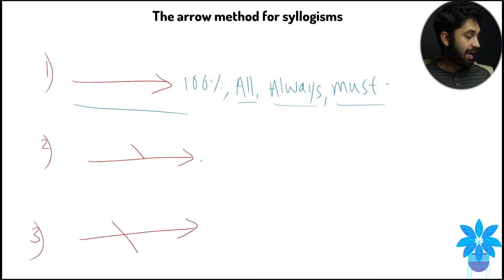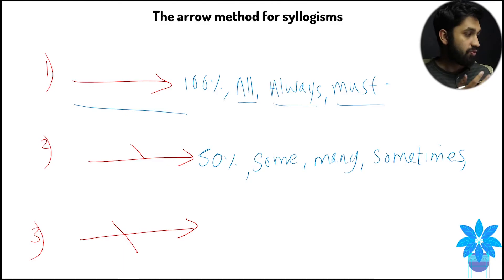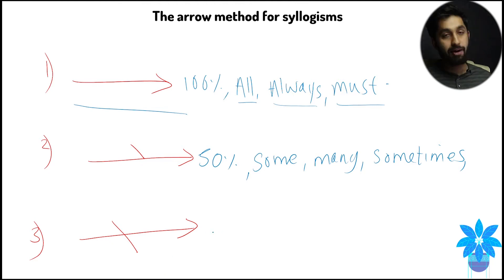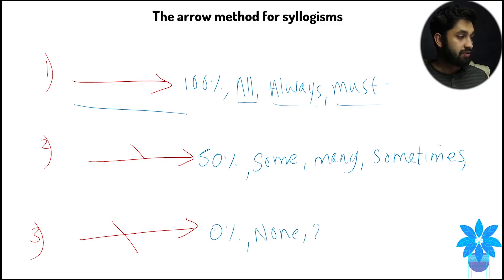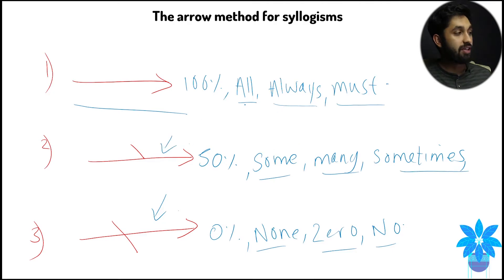This second arrow represents 50%. The keywords associated with it are: some, many, sometimes, and various other similar keywords. And this last arrow — the one with the line over it — represents 0%. The keywords for this are: no, non, zero. Every time you see these keywords, you draw the corresponding arrow.